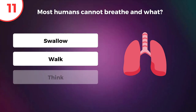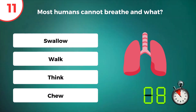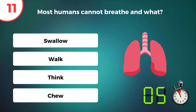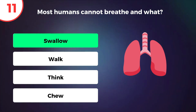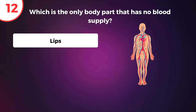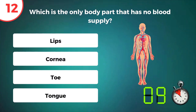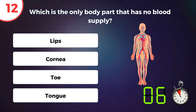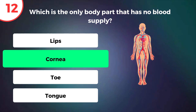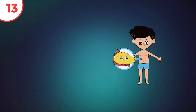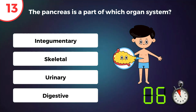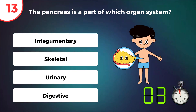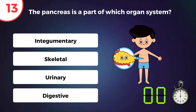Humans cannot breathe and swallow at the same time. Which is the only body part that has no blood supply? Cornea. The pancreas is a part of which organ system? Digestive.